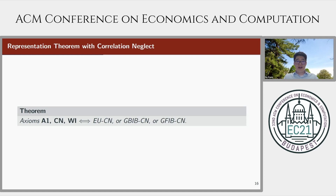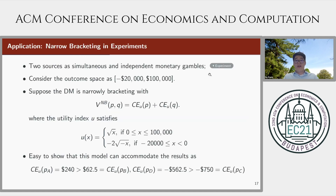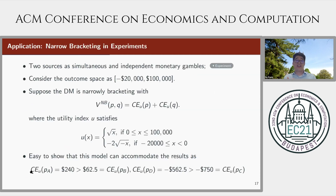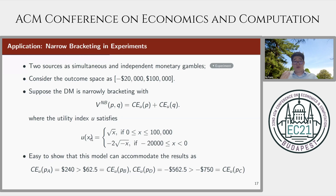Now we briefly consider one simple application: narrow bracketing experiments as in the introduction. Recall that subjects might simultaneously choose the dominated combination A and D. To see how this is consistent with narrow bracketing, suppose we use the functional form of summing certainty equivalents, with standard gain-loss utility: square root of x for gains and loss aversion parameter 2. It is easy to show that with this utility function, A is strictly better than B and D is strictly better than C, and hence a narrow bracketer will choose A and D simultaneously.